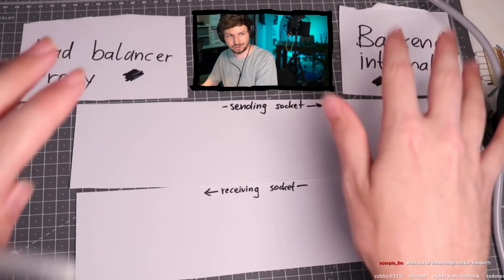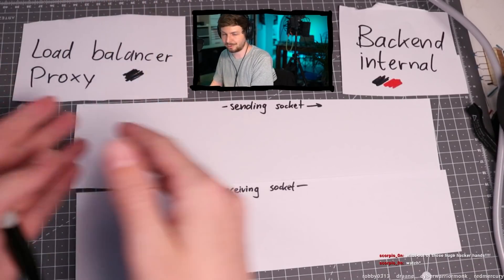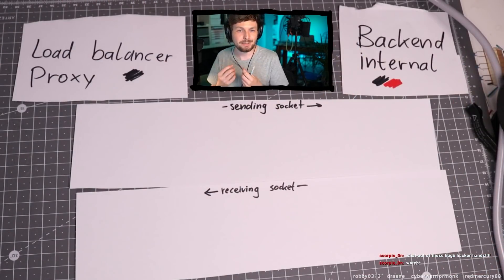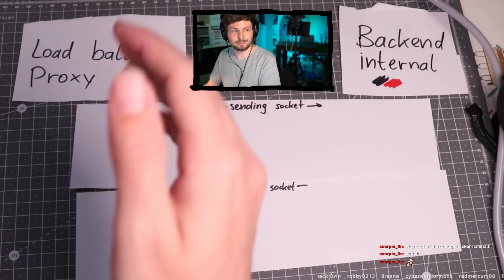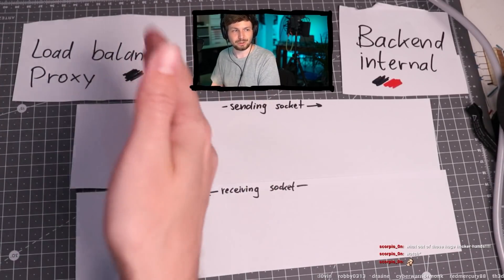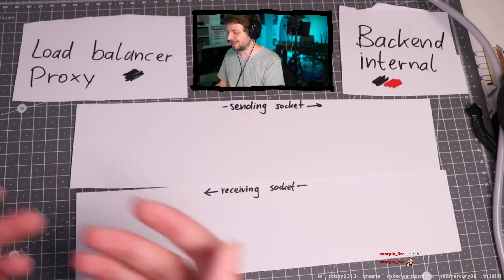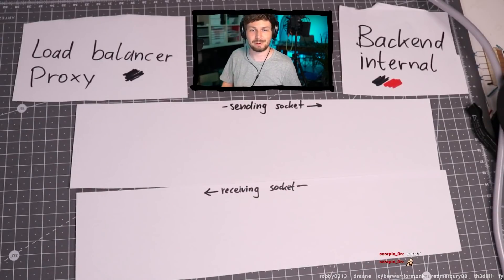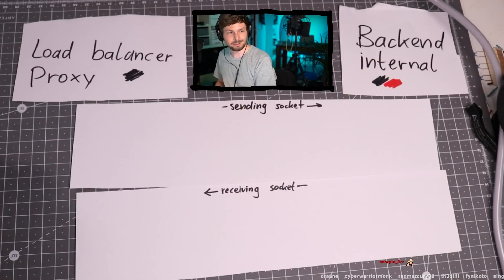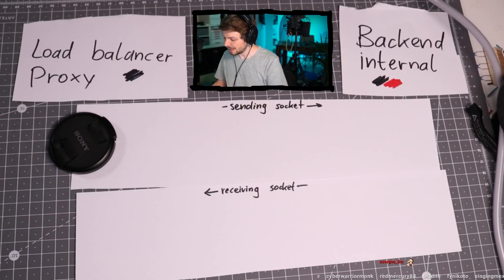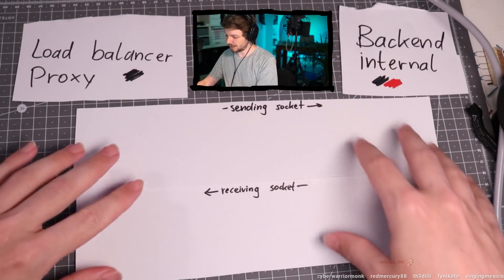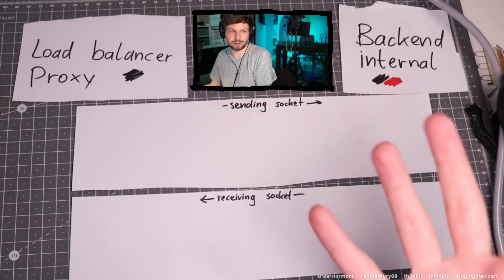Even in a one-server setup, it's often the case that you have a proxy in front and a backend after it, especially when you host your website on Amazon or Google Cloud or whatever. You might have the Google or Amazon load balancer automatically in front of it without even realizing it. So you have a request coming in to the load balancer and it sends it over to the backend. Servers are connected over a network with sockets.